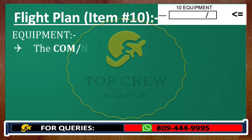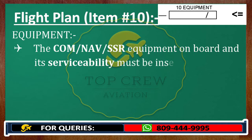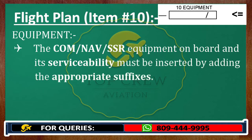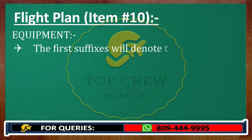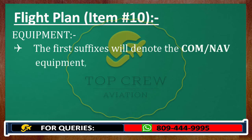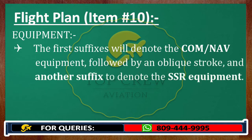The communication, navigation, and SSR equipment on board and its serviceability must be inserted by adding the appropriate suffixes. The first suffix will denote the communication and navigation equipment, followed by an oblique stroke and another suffix to denote the SSR equipment.